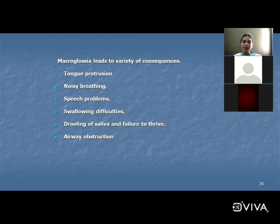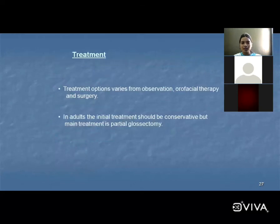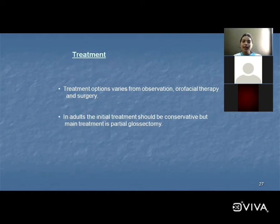These are the consequences seen in macroglossia: tongue protrusion, noisy breathing, speech problems, swallowing difficulty, drooling of saliva, and airway obstruction. Treatment options vary from observation and speech therapy to surgery; the main treatment in adults is partial glossectomy — removal of half part of the tongue.